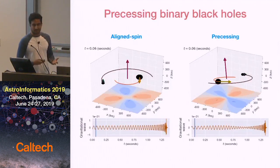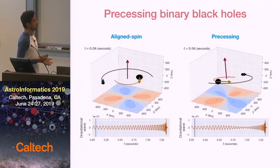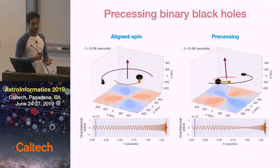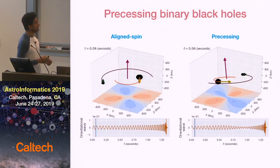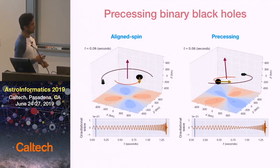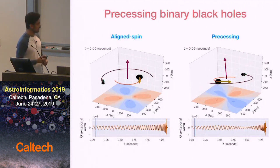We applied this method — which I showed in a one-dimensional example — to the much more complex problem of precessing binary black holes. In these movies, the black holes are represented by markers: the size indicates the radius of the black hole, and the arrows indicate the spins. The arrow in the center is the orbital angular momentum, always perpendicular to the plane of the orbit. The wave shown is the plus polarization of the gravitational wave as seen by an observer at infinity.